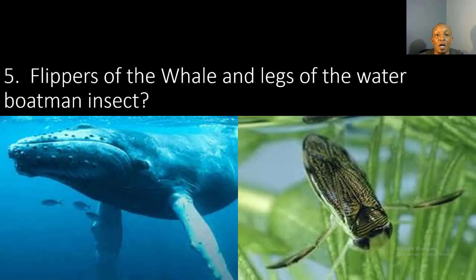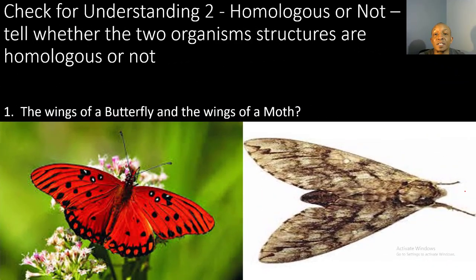Number five: flippers of the whale and legs of the water boatman insect. You have 10 seconds to respond. Now let's see how you did on your second check for understanding. Number one — are the wings of the butterfly and the wings of a moth homologous? Both of the structures are similar, so yes, these wings are homologous.